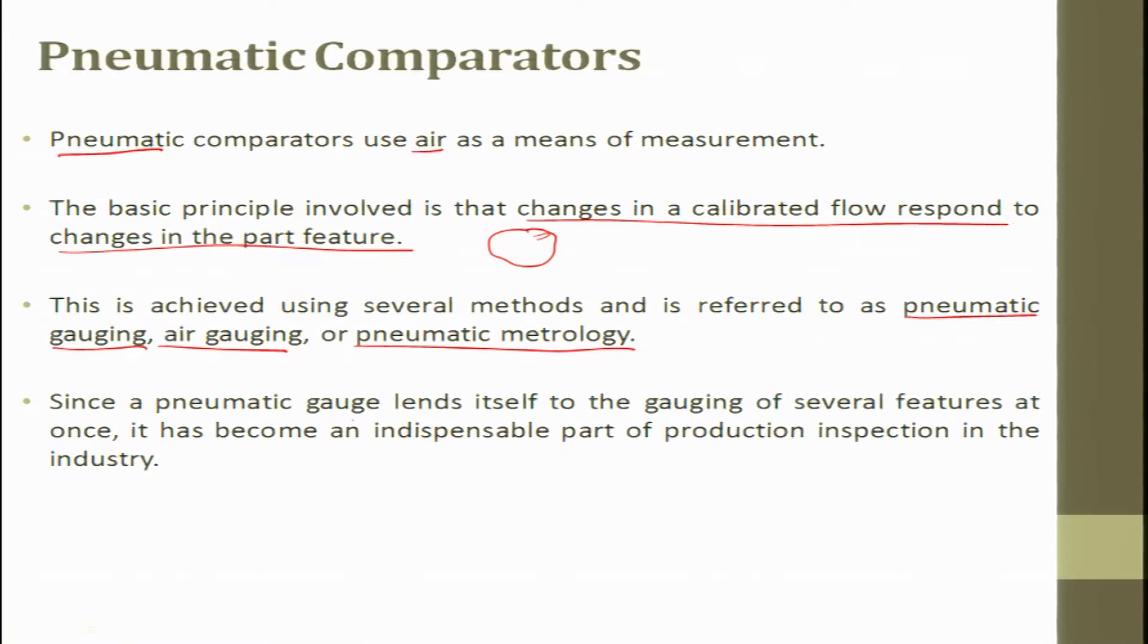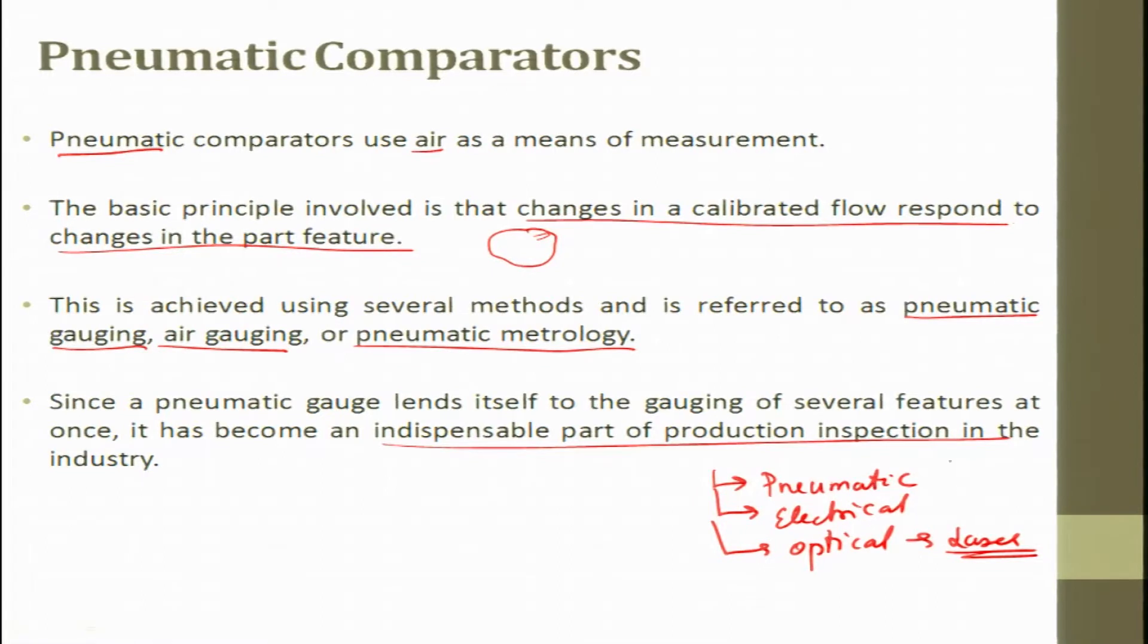Since pneumatic gauge lends itself to the gauging of several features at once it has become an indispensable part of production inspection in the industries. More than mechanical pneumatic, here pneumatic you do not have moving parts. Moment the number of parts are reduced then the repeatability and reliability of the equipment goes very high. That is why today people always move to pneumatic, people move to electrical because it is all non contact and people look for optical.